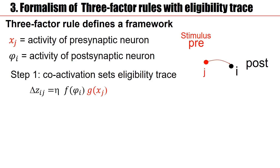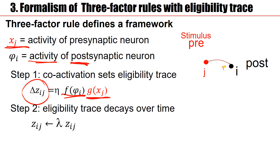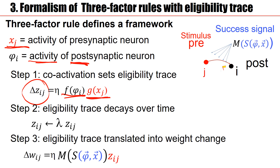The general formalism: I have a signal from the activity of the presynaptic neuron — some function of x_j — and a signal arising from the activity of the postsynaptic neuron — some function of phi. This co-activation sets the eligibility trace; that's step one. The eligibility trace decays over time — lambda is smaller than one. But if in time we have a success signal, this signal is transmitted by a neuromodulator acting as a third factor in the learning rule, and this implements the change of the connection — strengthening the connection from neuron j to neuron i.